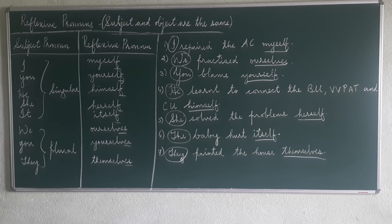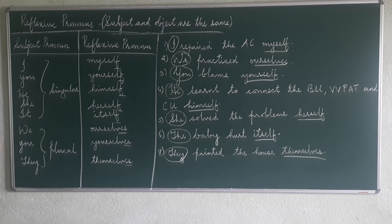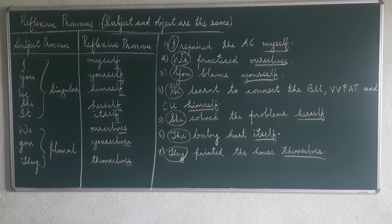As I said, we use a reflexive pronoun when the subject and object are the same persons. See the exercises: 'I repeat the AC myself' — the action is done by the first person 'I', so it changes into 'myself'; the action is being reflected back. Second: 'We practiced ourselves.' Keep in mind that the object can be a direct object, an indirect object, or it can come with a preposition.